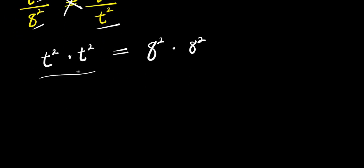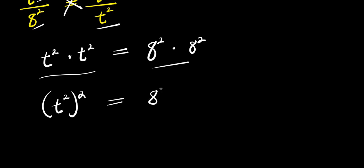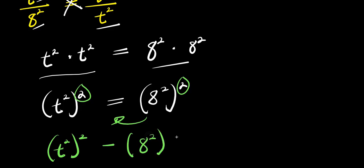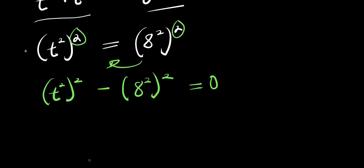Now here we can express this as t power 2 raised to the power of 2, and this equals 8 power 2 raised to the power of 2. So at this point we have power 2 on both sides — let's bring this over. We have t power 2 raised to the power of 2 minus 8 power 2 raised to the power of 2 equals 0. Since both terms have power 2, we can make use of difference of two squares.